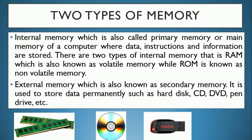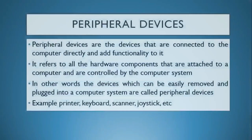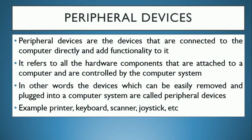External memory is also known as secondary memory. External storage devices are used here — things like CDs and DVDs. Peripheral devices are the devices that are connected directly to the computer — like keyboard, mouse, and monitor. They refer to all hardware components that are controlled by the computer system via the operating system or system software.